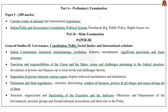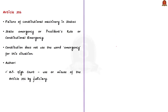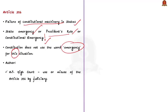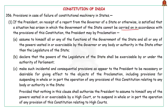Before going further, the relevant syllabus is given here for your reference. Article 356 provides for provisions in case of failure of constitutional machinery in the states — simply put, it deals with state emergency, also popularly known as President's Rule or constitutional emergency. Importantly, the Constitution does not use the word 'emergency' for this situation. This emergency is proclaimed by the President if he or she is satisfied that the government of a state cannot be carried on in accordance with the provisions of the Constitution.